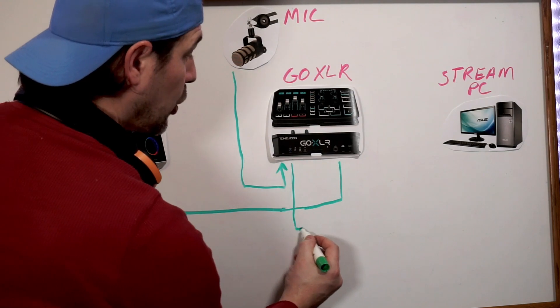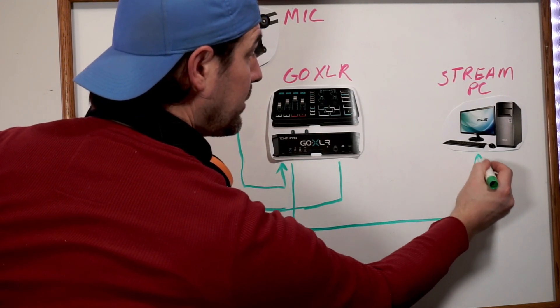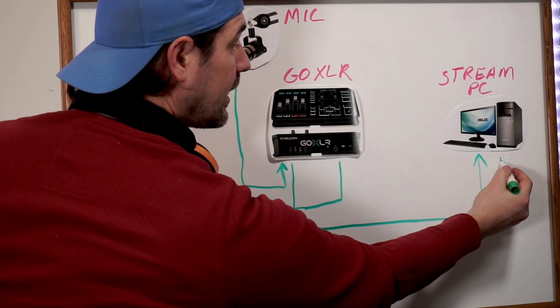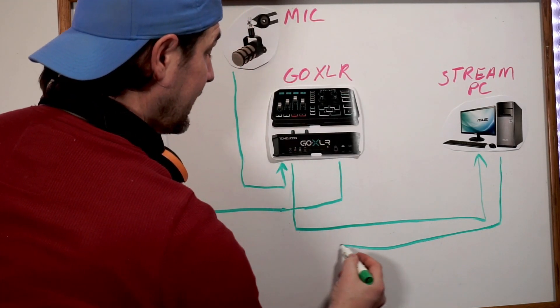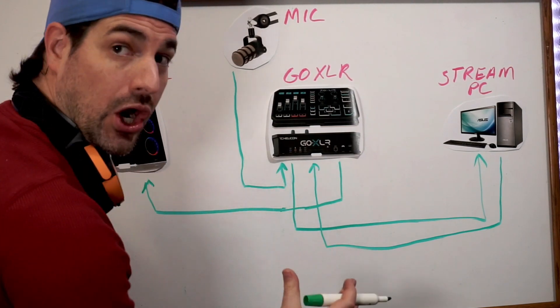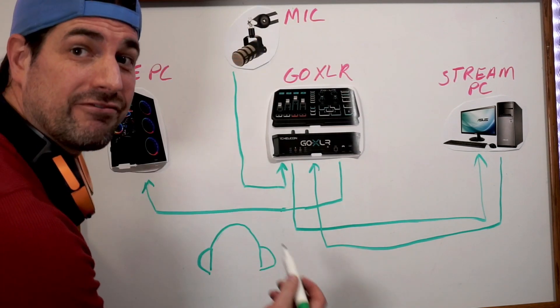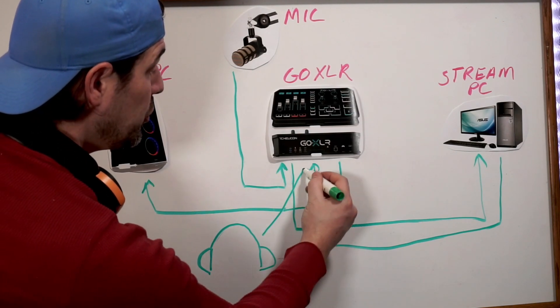Connect the line-out of your GoXLR to the line-in of your streaming PC. Be sure to use the line-in and line-out, not the microphone-in and microphone-out. Now, connect the line-out of your streaming PC into the line-in of the GoXLR. This is important if you want to hear those OBS alerts coming from your streaming PC. And finally, connect your favorite pair of headphones to your GoXLR.